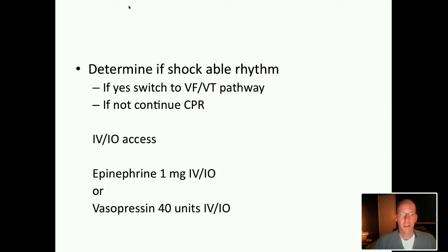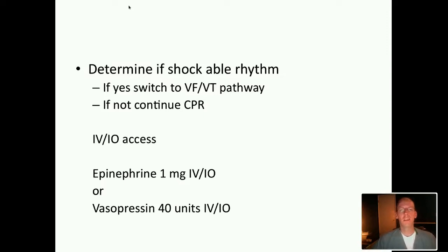If this is a non-shockable rhythm, continue CPR and immediately try to get intravenous access. Intravenous access may be challenging, so the new guidelines encourage early interosseous administration because for PEA you need to get vasopressors in early. Unlike V-fib, where the primary goal is CPR and defibrillation, the primary goal for PEA is compressions and giving vasopressors. If you can't establish IV access, switch to interosseous.